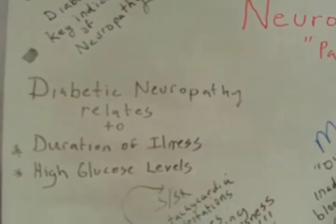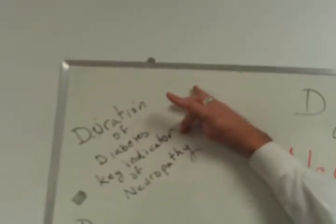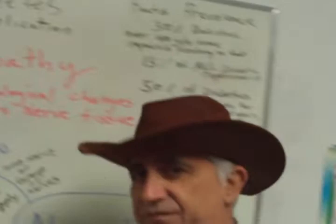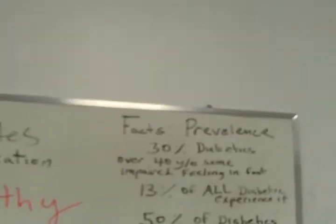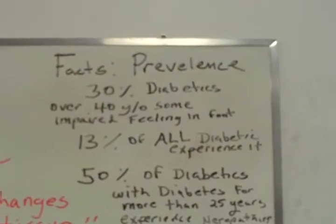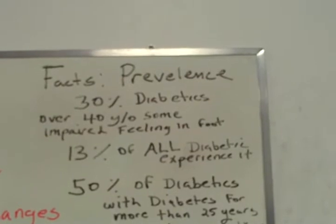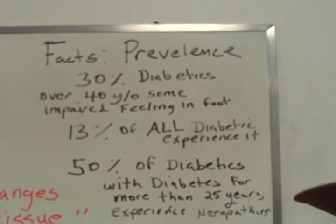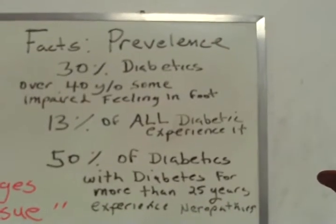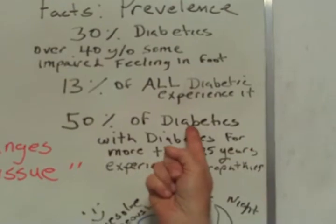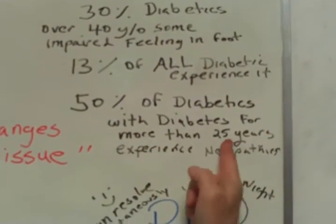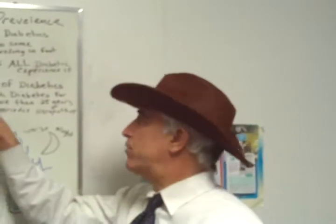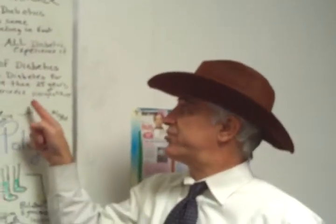One key thing to keep in mind: duration of diabetes is probably the key indicator for neuropathy. Now, let's get some facts and figures. Prevalence: 30% of diabetics over the age of 40 will have some sort of impaired feeling in one area of their foot. 13% of all diabetics experience neuropathy. Also, 50% of diabetics with diabetes for more than 25 years experience neuropathies.